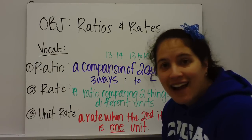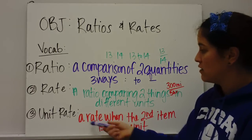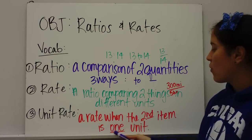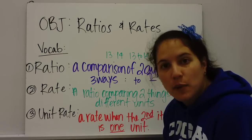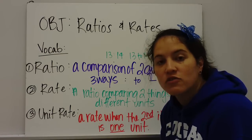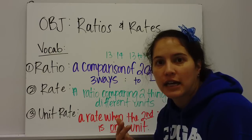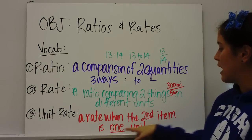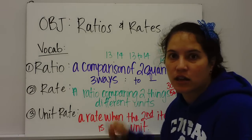And the very last definition is unit rate. A unit rate is a rate, notice rate, when the second item is one unit. So you've heard things like miles per hour, miles per gallon, feet per second. Those are unit rates when you have that word per, per gallon, per mile, per second. And so a unit rate is when the second item is one unit. So we're going to do examples of those. Pause this, get the vocabulary down.